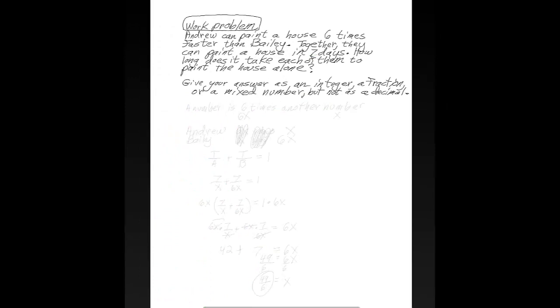Hi, this is your teacher, Barbara Rademacher, and we're going to do a more involved work problem. Andrew can paint a house six times faster than Bailey. Together, they can paint a house in seven days. How long does it take each of them to paint the house alone? Now, this is a little more difficult, and it's also a little more tricky.